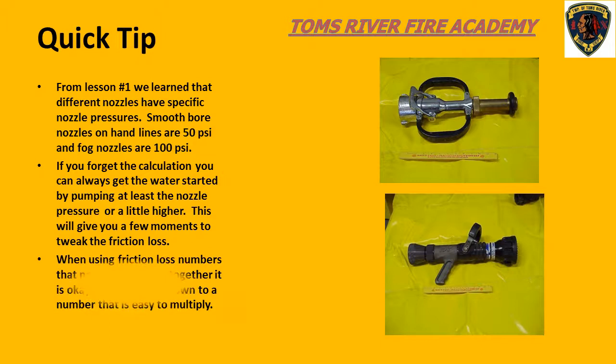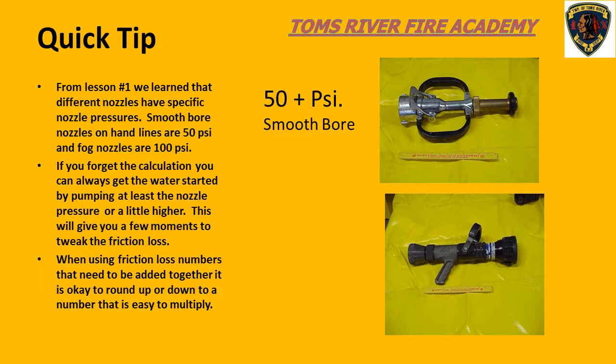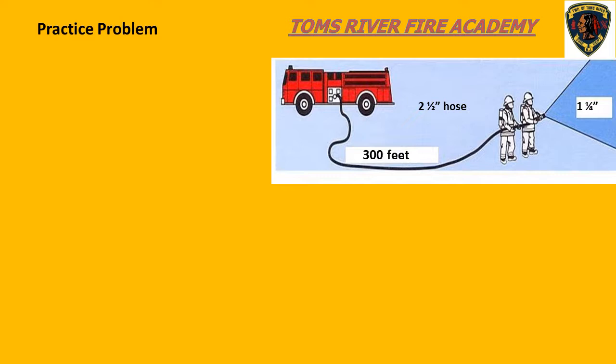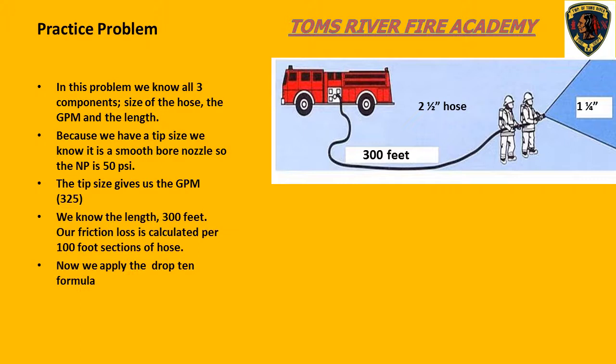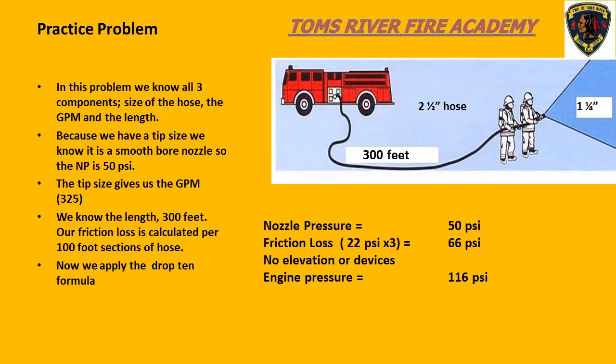Try this practice problem. We know the flow, the size of the hose, and the length. The flow is 325 gallons per minute. Using the Drop 10 method, we get a friction loss of 22 PSI. There are three 100-foot sections of hose, so the total friction loss is 66 PSI. The nozzle pressure is 50 PSI. Adding these together gives an engine discharge pressure of 116 PSI.